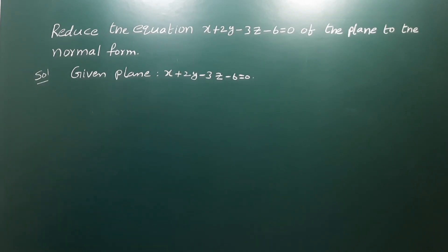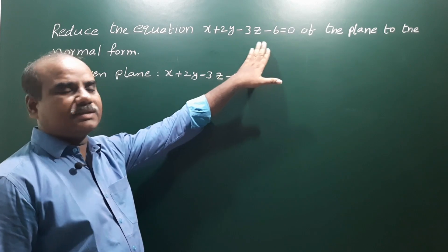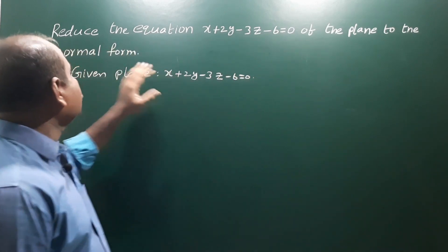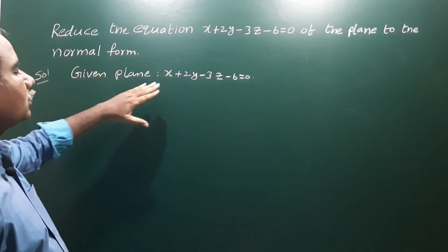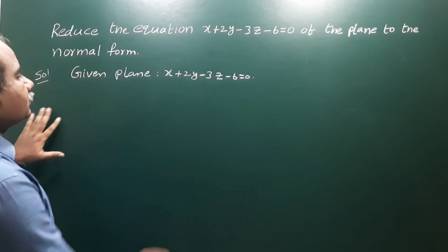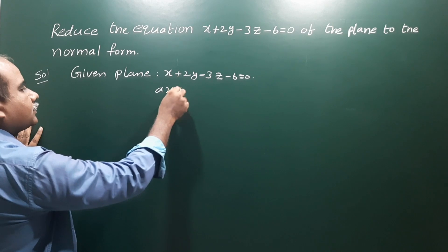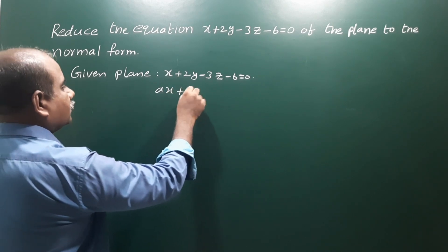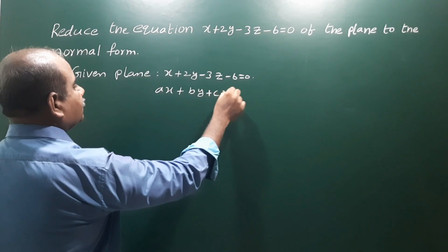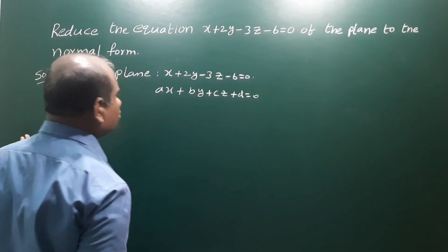Reduce the equation x plus 2y minus 3z minus 6 equal to 0 of the plane to the normal form. The plane equation is to be converted to normal form. Compare with the equation of a plane: ax plus by plus cz plus d is equal to 0.